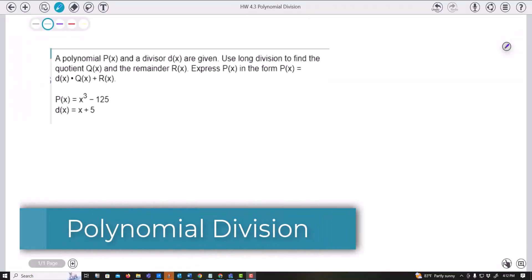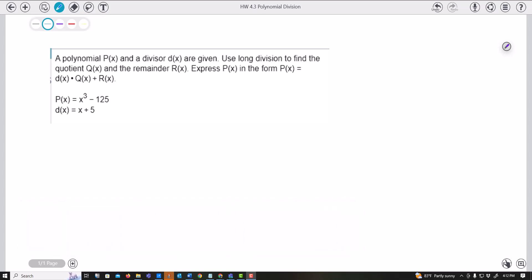Okay, we're given this polynomial and the divisor, the x plus 5, and it says use long division to find the quotient. Well, I'm going to show you how to use long division or synthetic division, so you can decide which way you want to do this.